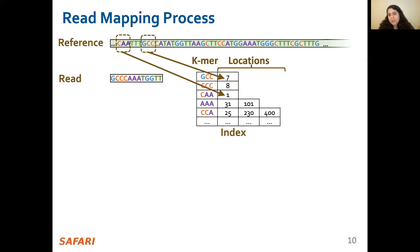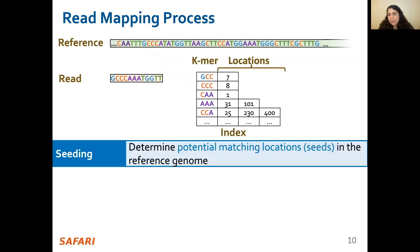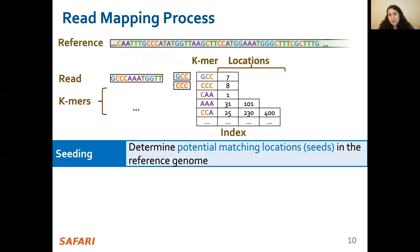Readmapping is a three-step process. State-of-the-art readmappers involve several heuristics to reduce the cost of expensive alignment computation. In the first step, called seeding, the mapper determines the potential matching locations or seeds in the large reference genome where the read could map. To do so, the readmapper extracts K-mers from the read and looks up those K-mers in the reference index. For all the K-mers that hit in the index, the readmapper marks their locations in the reference genome as the read's potential matching locations, also called seeds.